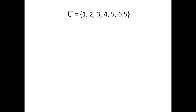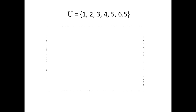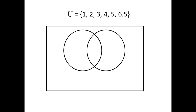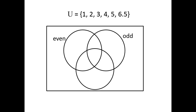So let's suppose we have a universal set that contains the numbers 1, 2, 3, 4, 5, and 6.5. If we want to show these numbers in a Venn diagram, we're going to start with a rectangle that will represent this universal set, so all of these numbers have to live within this rectangle. We're also going to identify three attributes to which these numbers might belong, represented by the circles: even, odd, and prime.